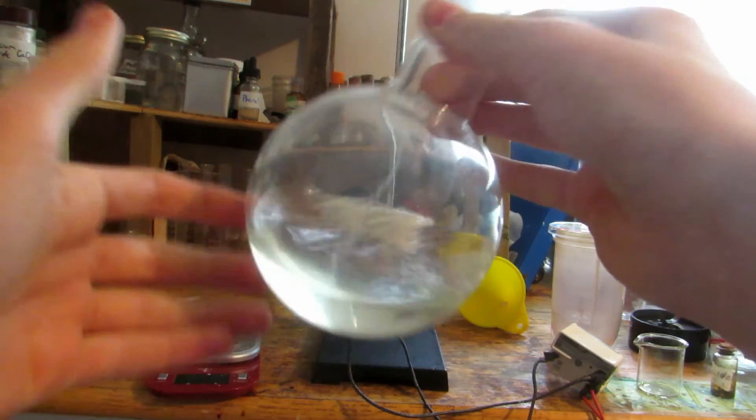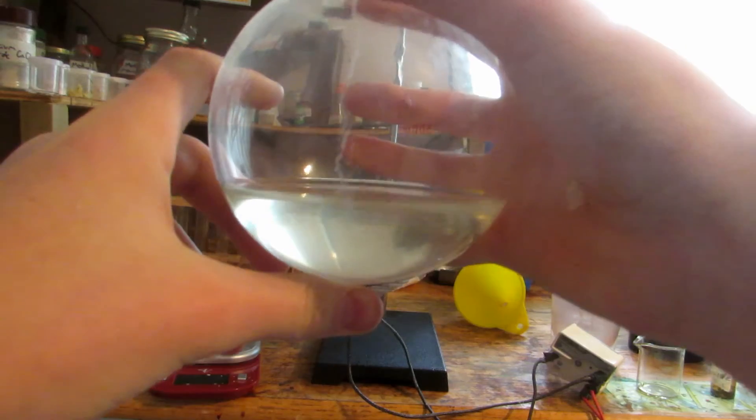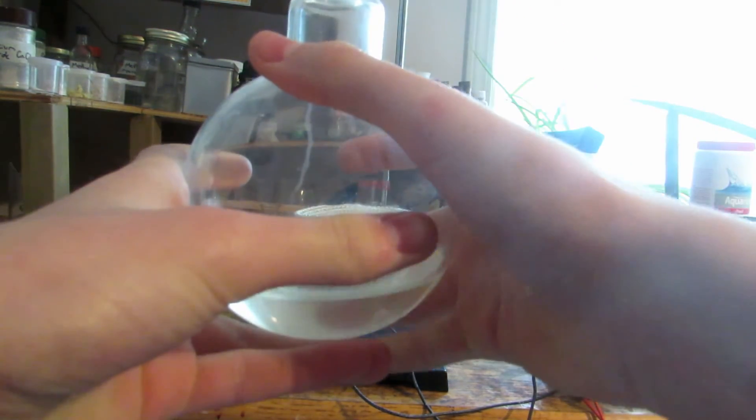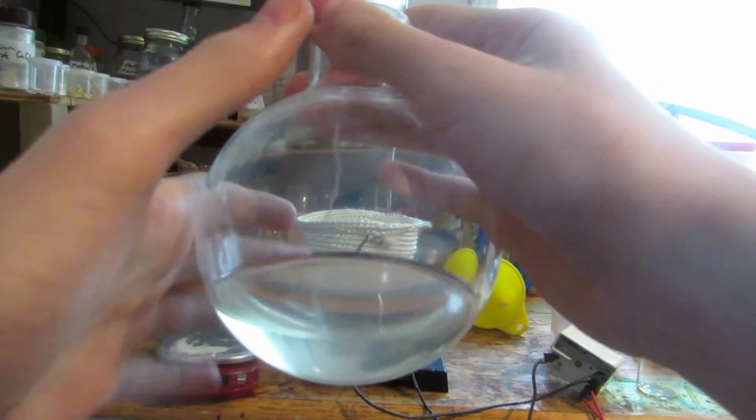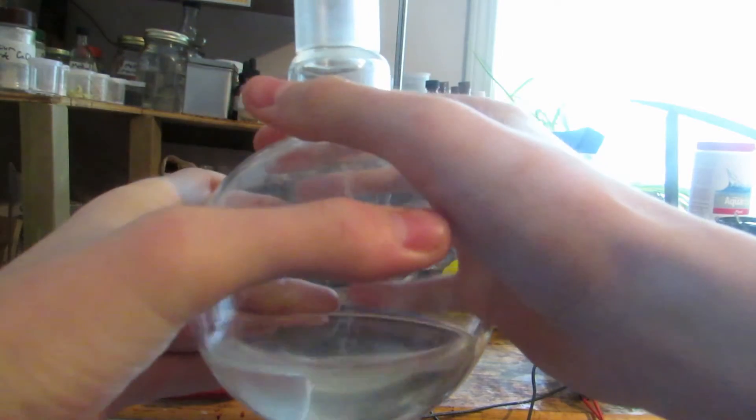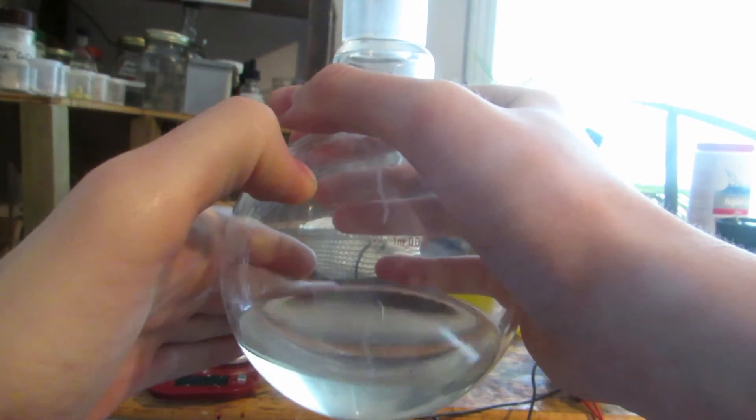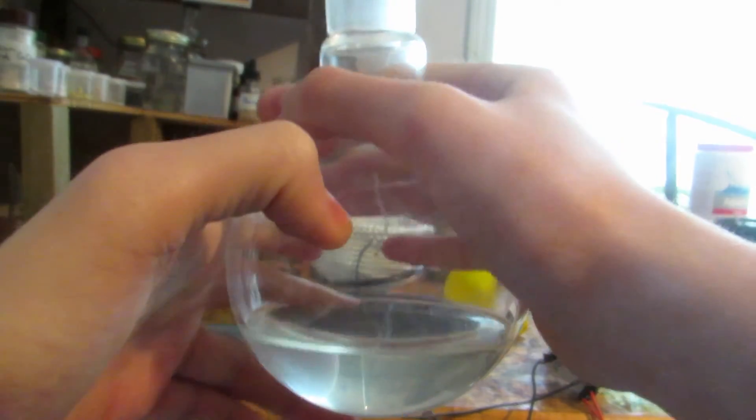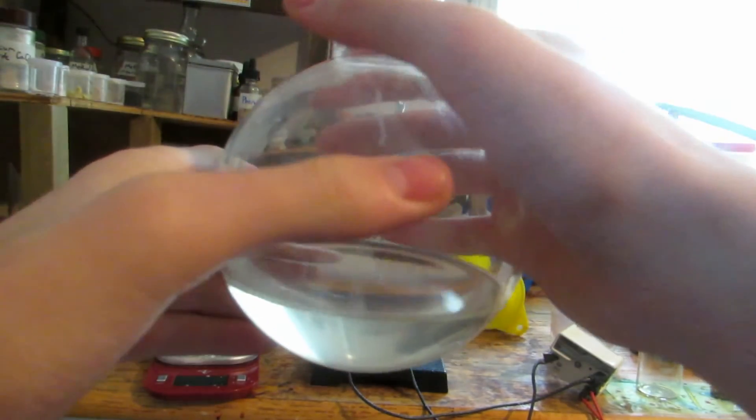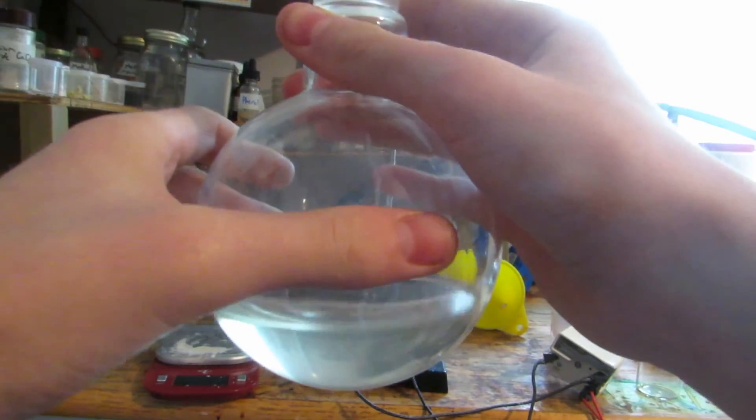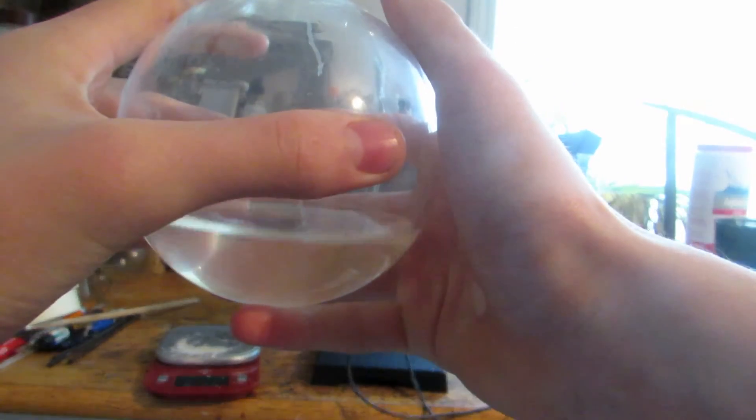When everything had dissolved, it looked quite clear, which is excellent. The solution is quite warm right now. We're going to cool this down, and the potassium iodate should precipitate out as it's much less soluble in cold water. We'll put this in the freezer, cool it down, and do a filtration. After filtering, we'll be left with a clear solution of relatively pure potassium iodide.